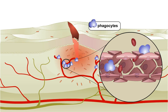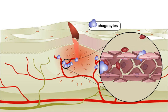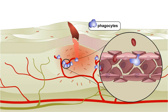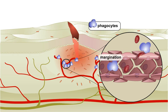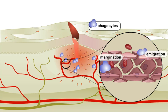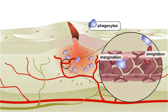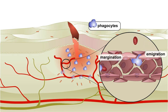Inflammation has three main functions: to destroy the agent causing injury, to limit the effects of the agent on the rest of the body, and to repair or replace damaged tissue.